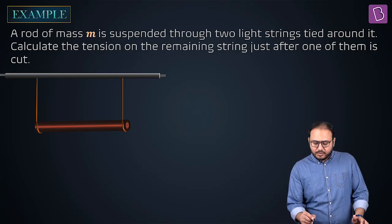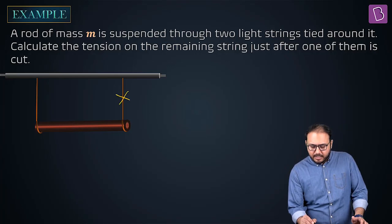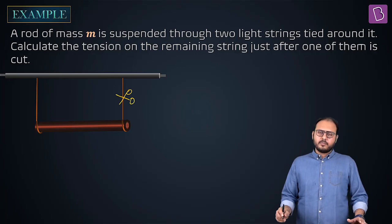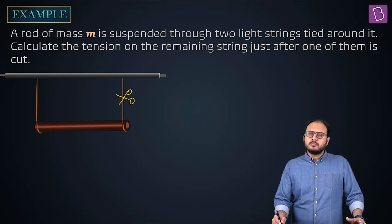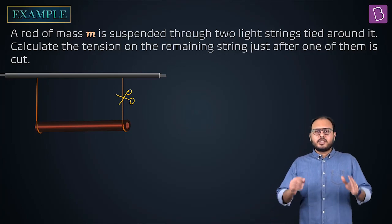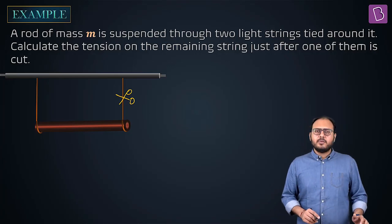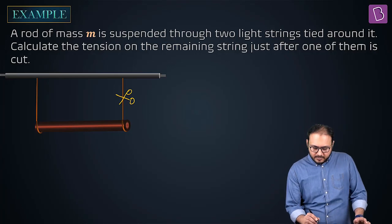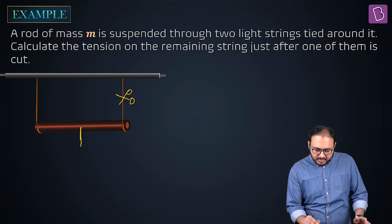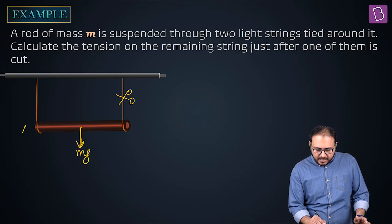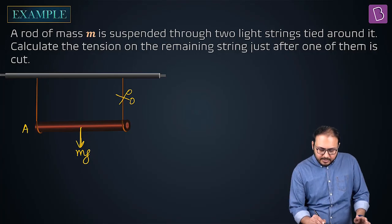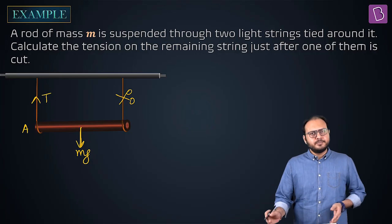Actually you could recite the answer out loud immediately. Cut this one, immediately after you cut what's the tension on the left one? Can you just shout out the answer? Mg by 4. Remember hinge. Now watch, let me call this point as A, let me call this point as C. Mg, let's say the tension just after it's cut is T.